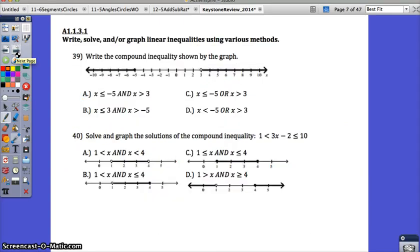Number 39 then. The compound inequality shown by the graph. Remember with compound inequalities, if the graph is showing both regions, a number can't be in here and also over here. So it must be an OR and cannot be an AND. Because I'm showing that both sets of numbers are solutions. If the shading was in between, we'd be more inclined to think it was an AND, because a number can satisfy both. But since there's two separate shadings, it's going to be an OR. So we can rule out A and B.